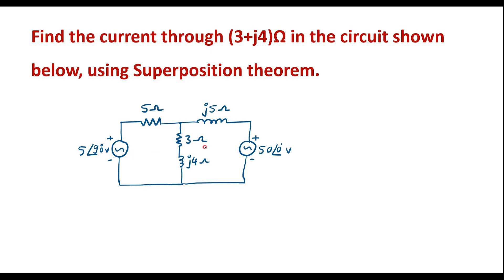As we know in superposition theorem, we are supposed to consider one source at a time. This circuit includes two voltage sources: one having 5∠90 magnitude, and another one is a 50 volt voltage source. So we are supposed to consider one source at a time and find the current in 3+j4. First, let me consider the 5∠90 volt voltage source. In that case, we have to short circuit the 50 volt source. Let me draw the equivalent circuit where I consider the 5∠90 source alone by short circuiting the 50 volt source.